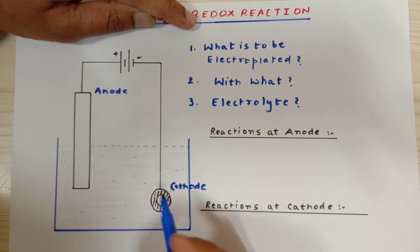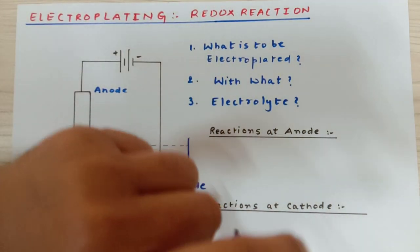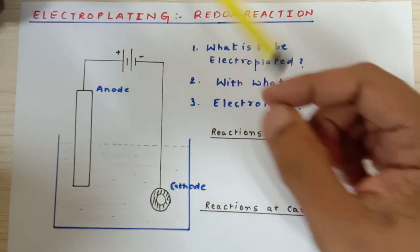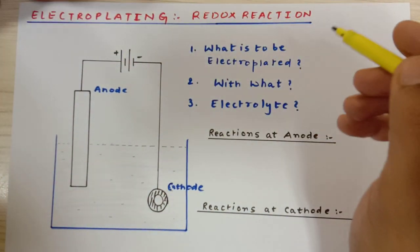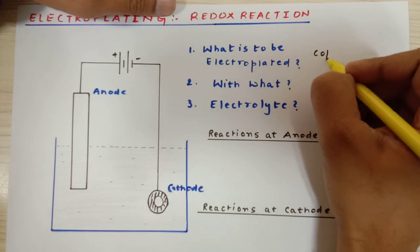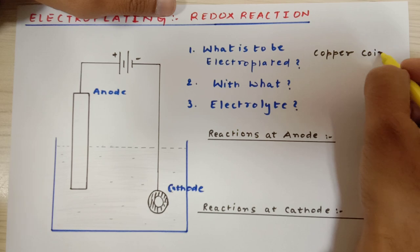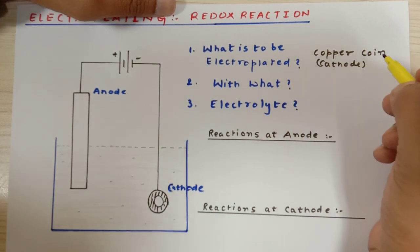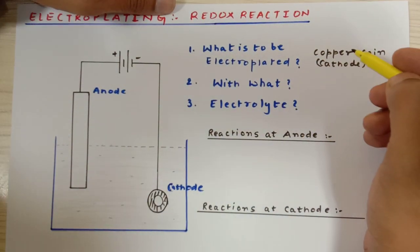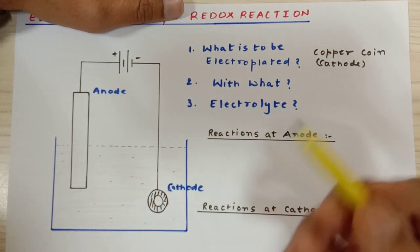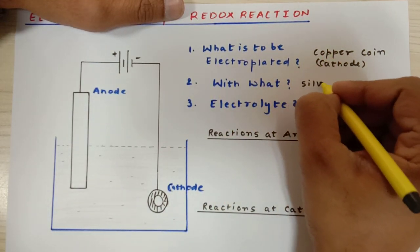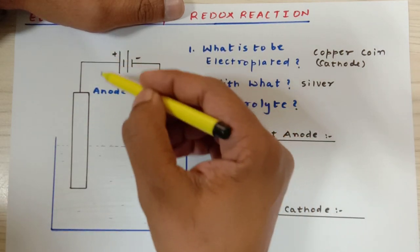Now here is a copper coin that is shown to you. This is a coin of copper. Since the copper coin, on a longer run, turns greenish in color when it is exposed to air and humidity, we want to preserve this coin and I want to give it a shiny look. So here, what I want to electroplate is a copper coin. Then that copper coin has to be made cathode.